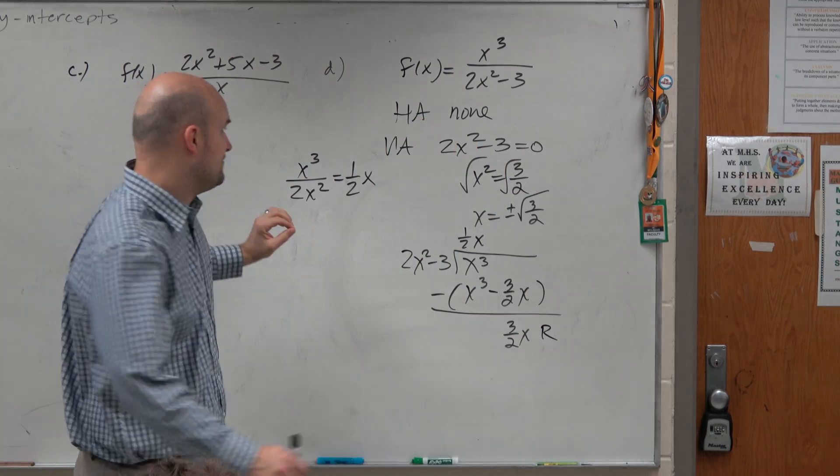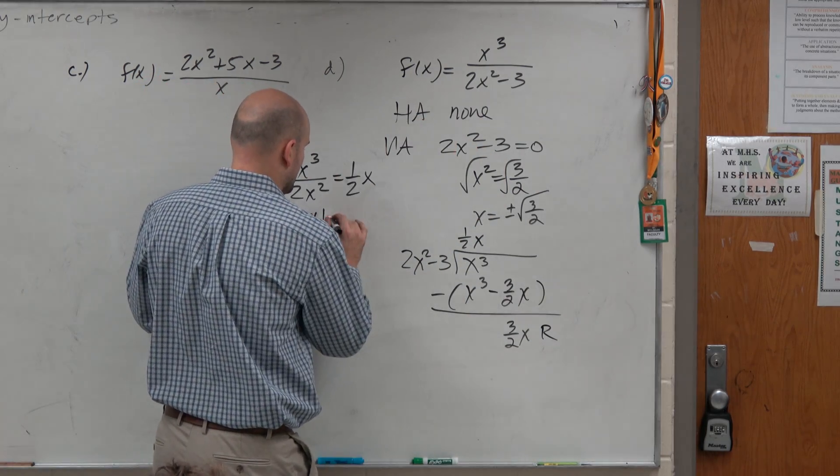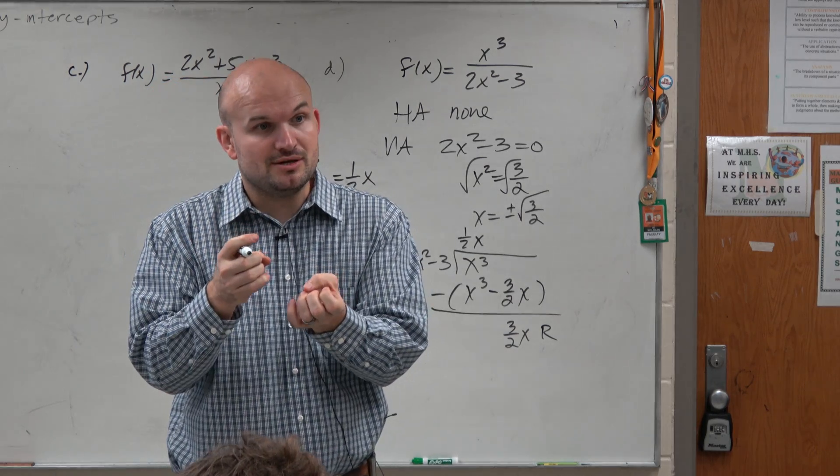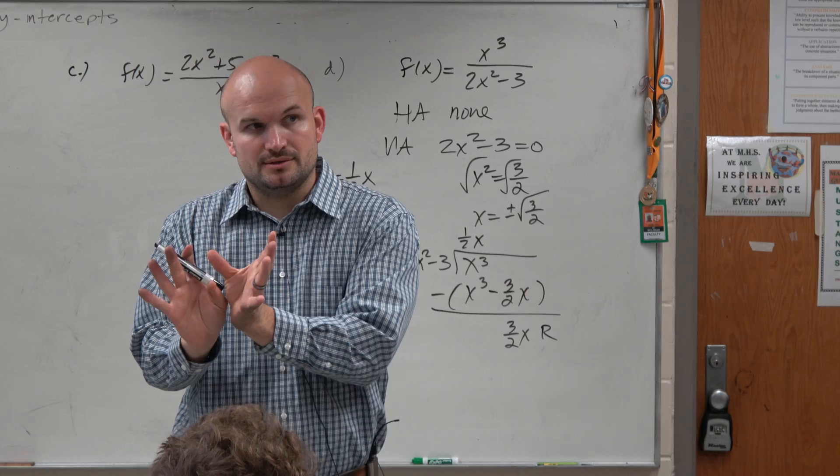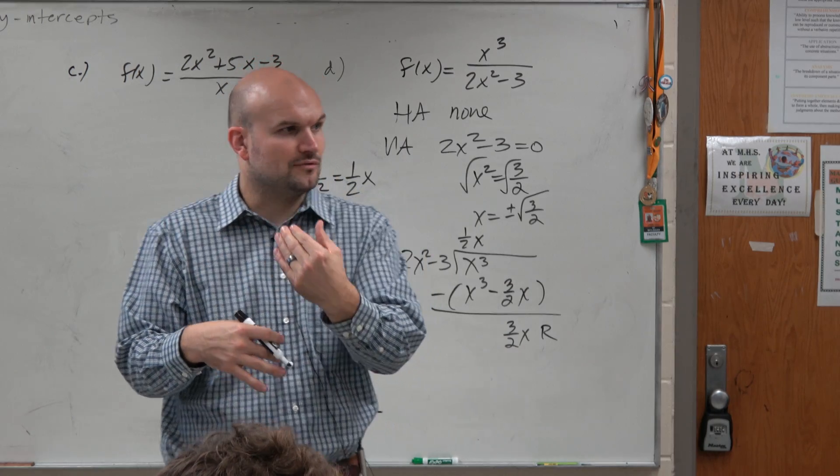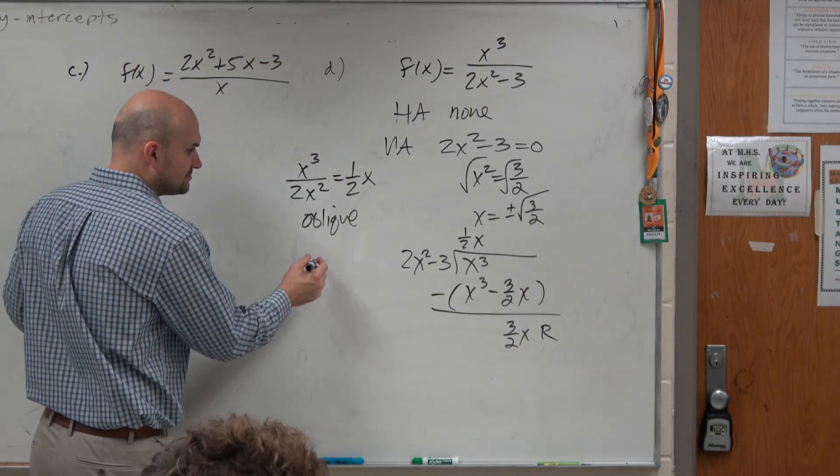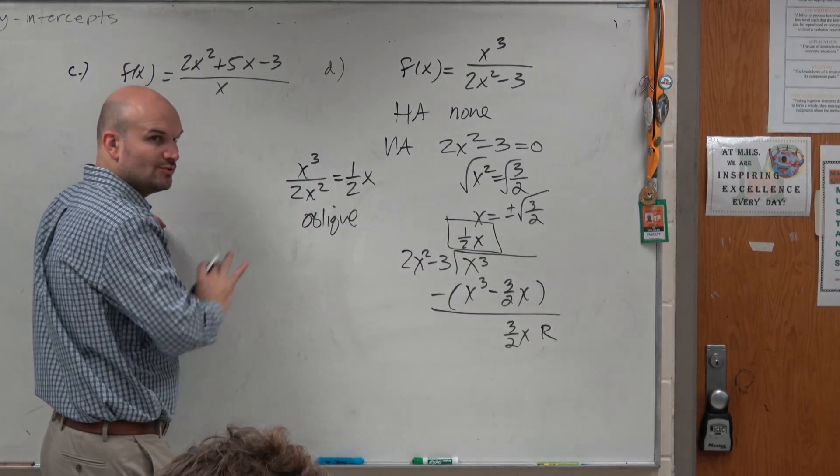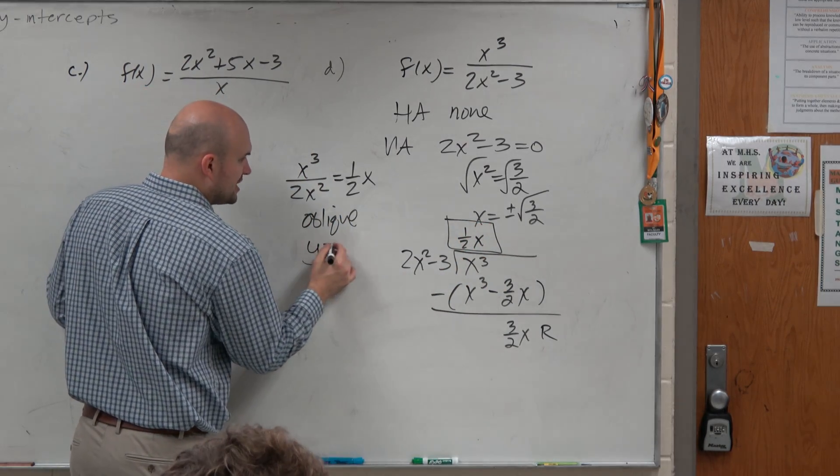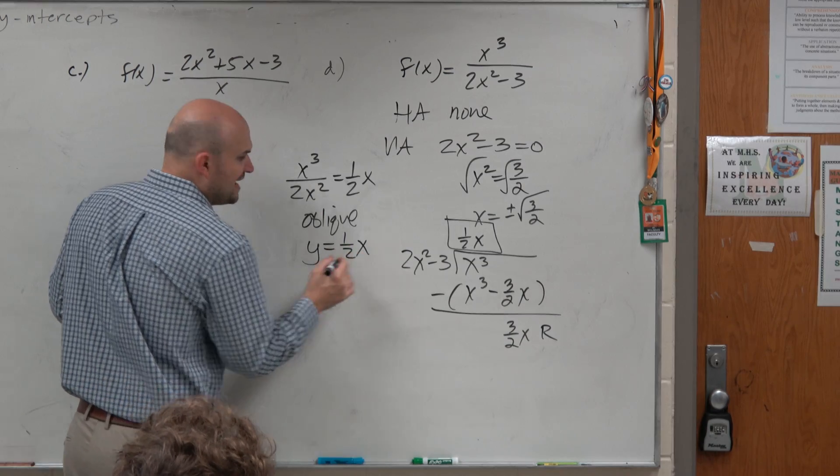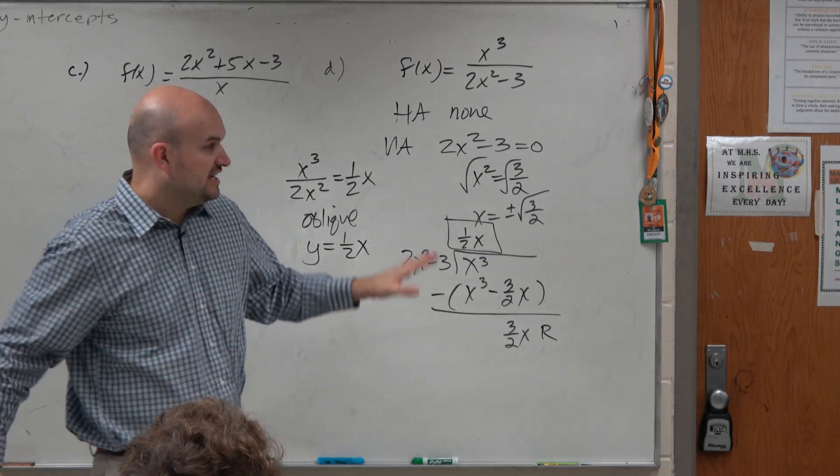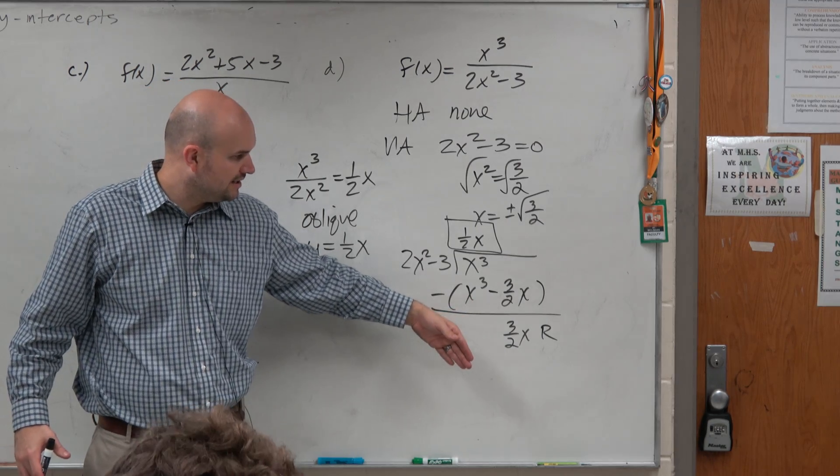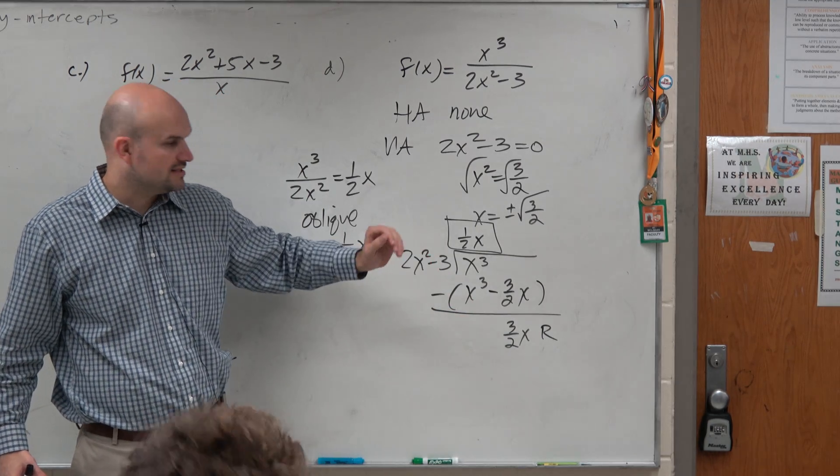Now the cool thing about finding the oblique asymptote is, unlike the previous problem where we're doing long division, we don't need the remainder. And I'll explain it to you when we look at the graph. So all we're going to do is just take the quotient without the remainder. So the oblique asymptote is 1 half x. So you keep on doing it until you get to a remainder.